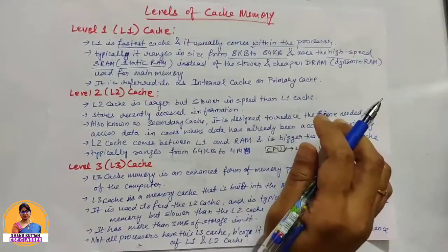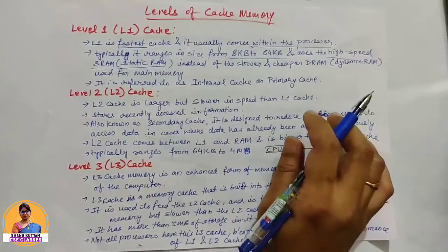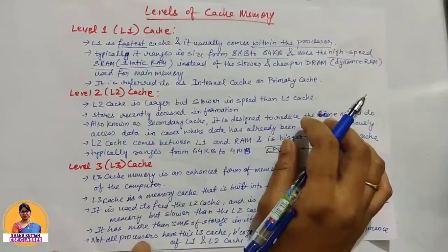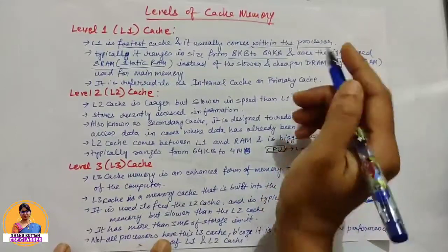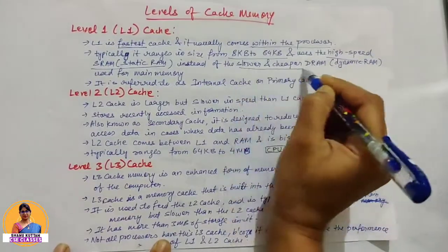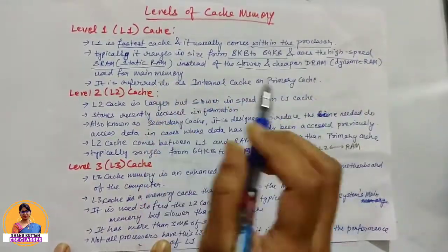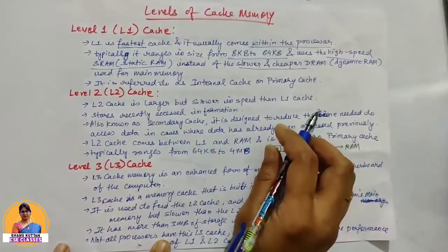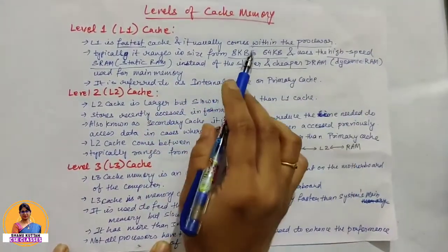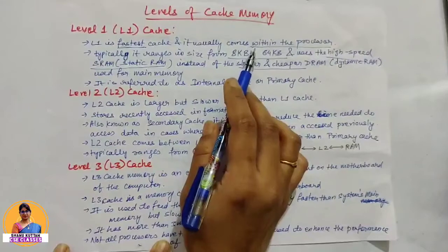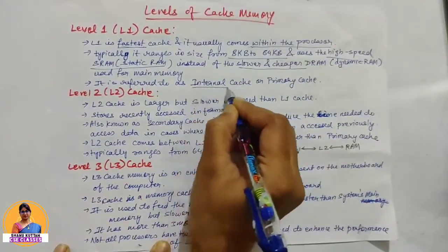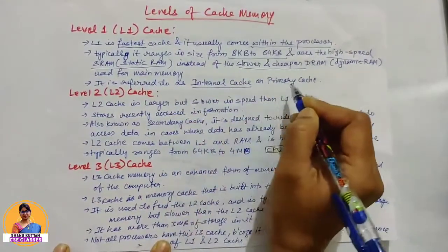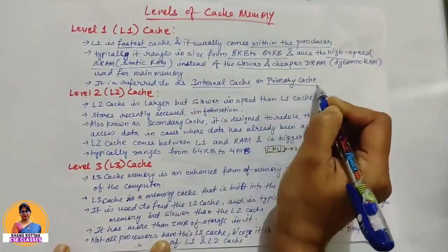Main memory, on the other hand, is made up of dynamic RAM (DRAM). Dynamic RAMs are slower and cheaper, and are basically used for main memory. Because L1 cache is within the processor, we call it internal cache or primary cache.